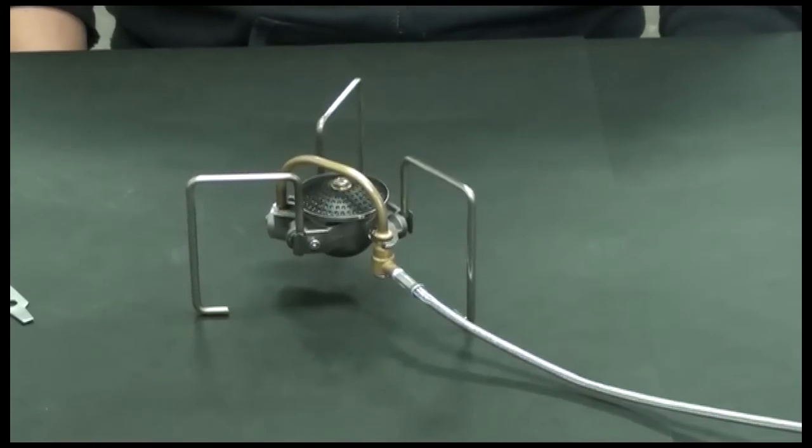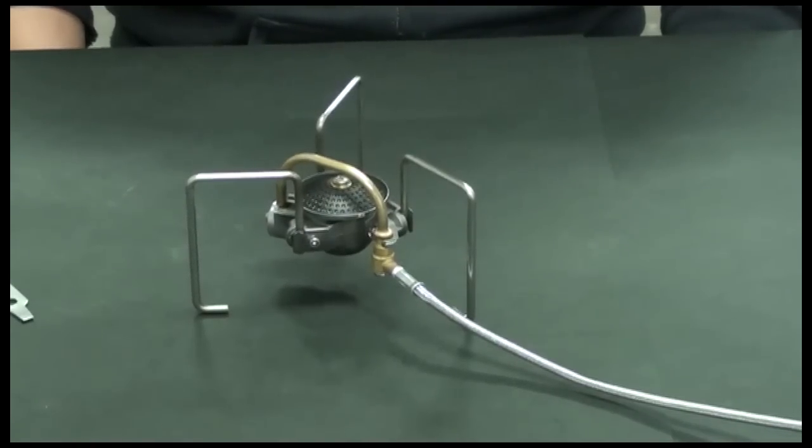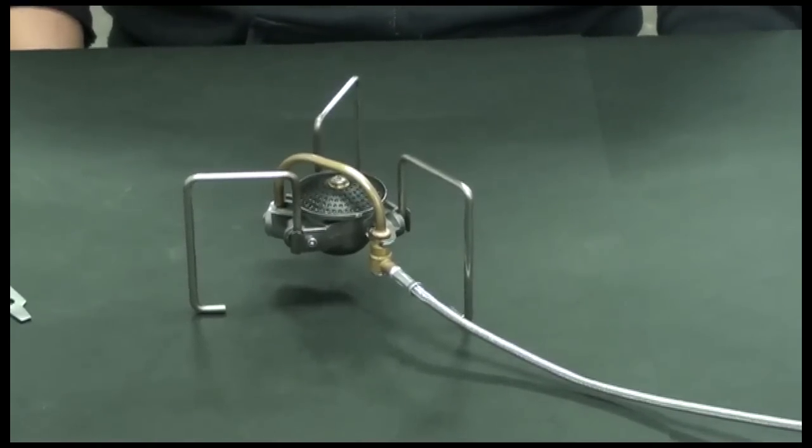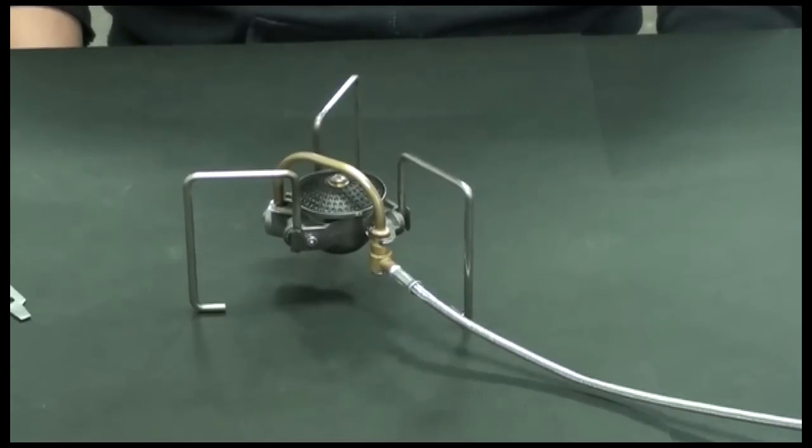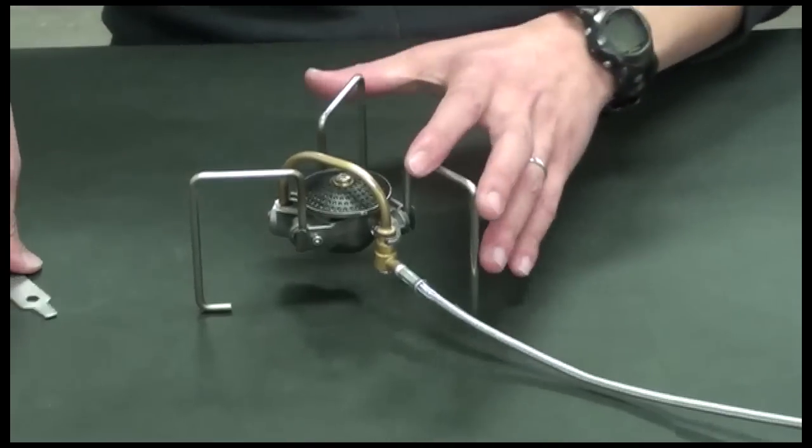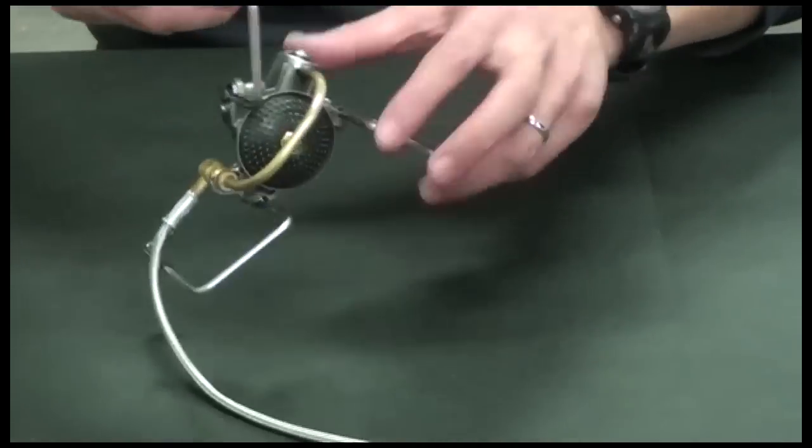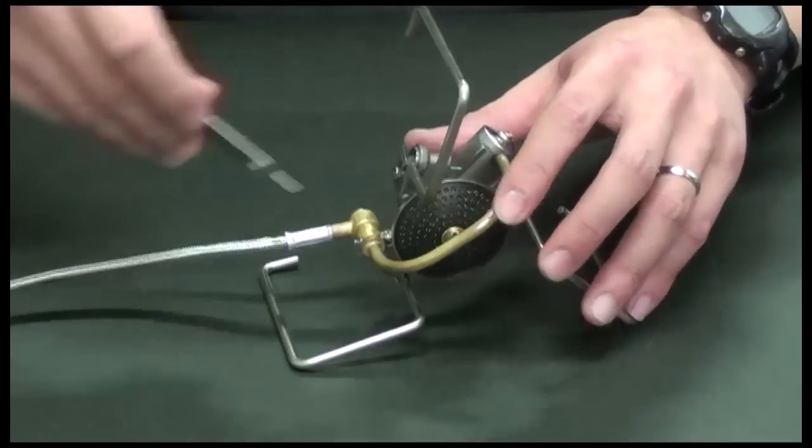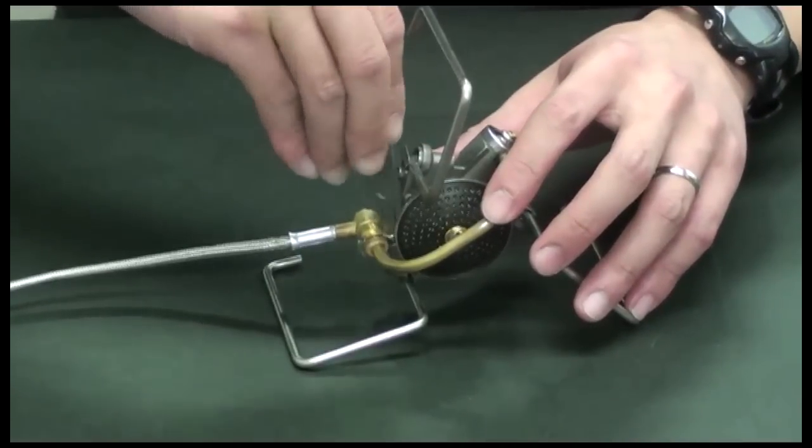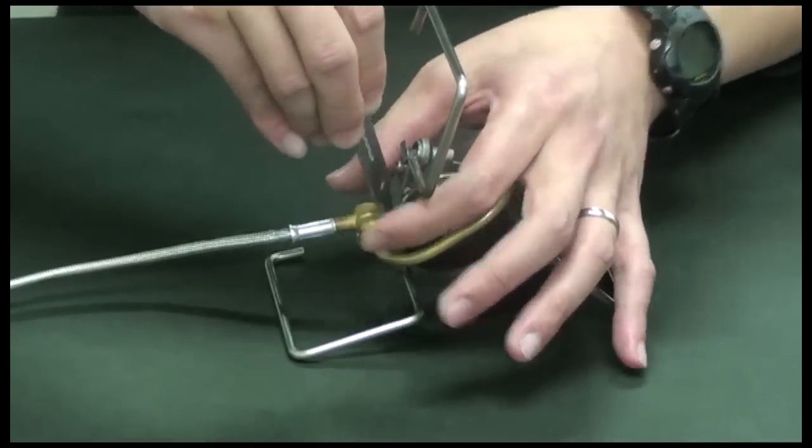This video is to demonstrate how to clean up the soiled burner head as well as the stove body. First of all, by using the mobile tool, unscrew the screw to take the generator and close your nut.